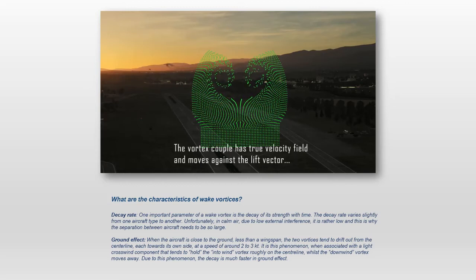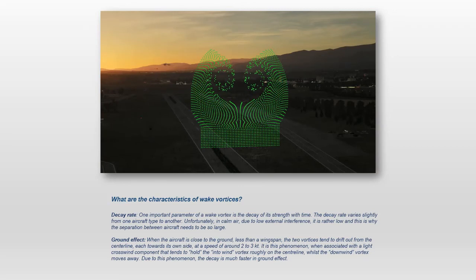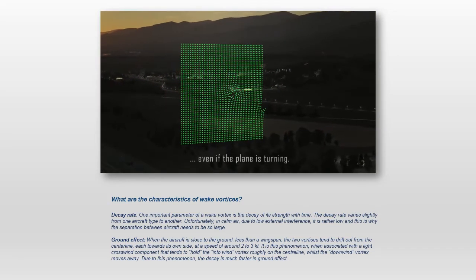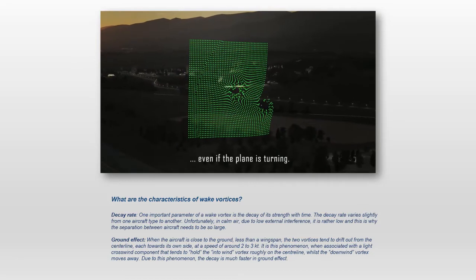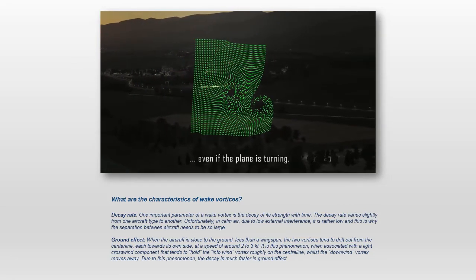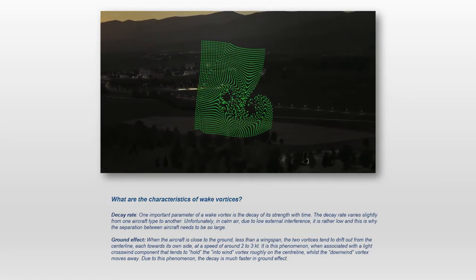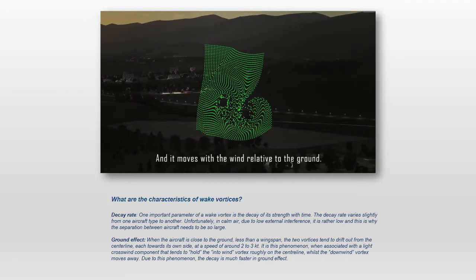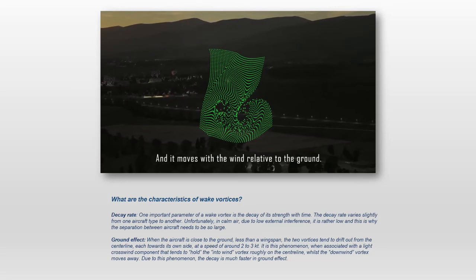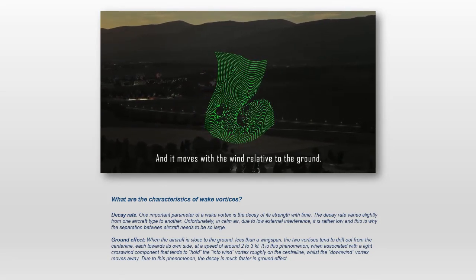Ground effect – When the aircraft is close to the ground, less than a wingspan, the two vortices tend to drift out from the center line, each towards its own side, at a speed of around 2 to 3 knots. It is this phenomenon, when associated with a light crosswind component that tends to hold the upwind vortex roughly on the center line, whilst the downwind vortex moves away. Due to this phenomenon, the decay is much faster in ground effect.